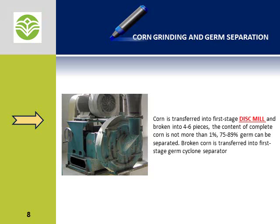Corn grinding and germ separation. Corn is transferred into a first stage disc mill and broken into 4 to 6 pieces. The disc mill, which consists of studded drums rotating in opposite directions, is designed to crack the corn kernel, separating the starch without damaging the corn germ. Kernels not fully opened are ground in a second mill as required.